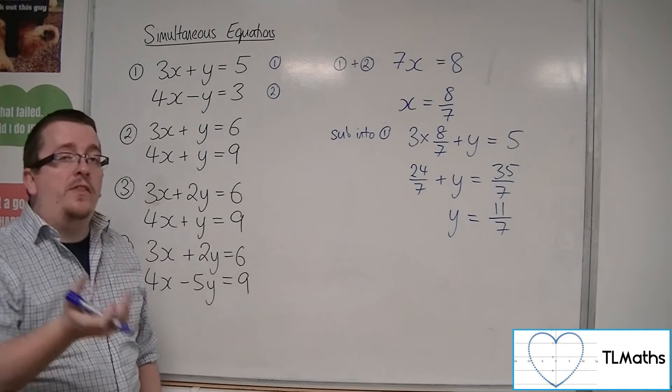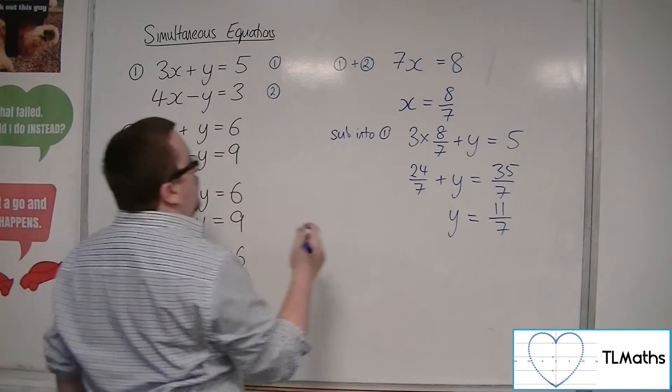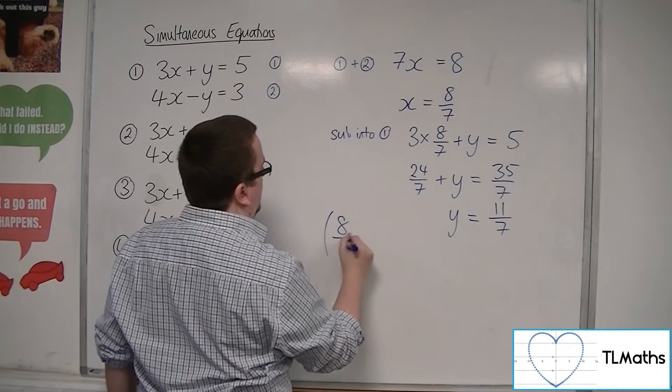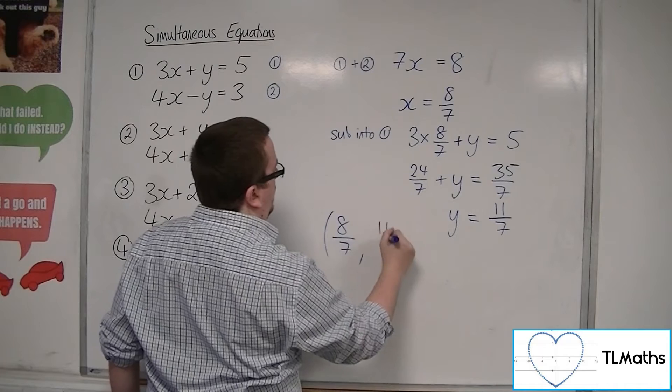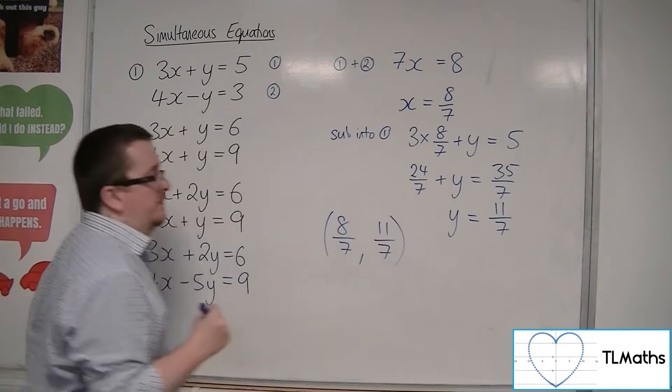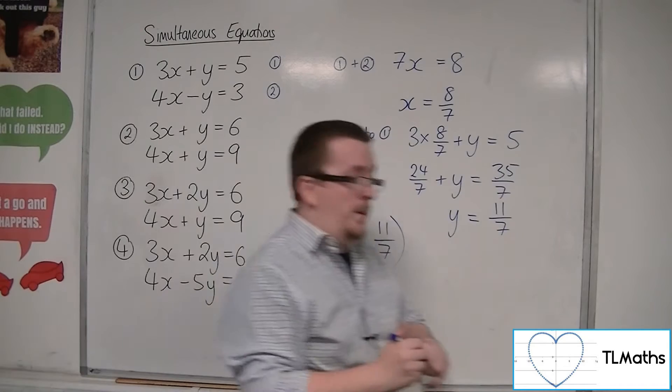So what that's telling me is that these two lines will be intersecting at 8 sevenths, 11 sevenths. And that's the first one.